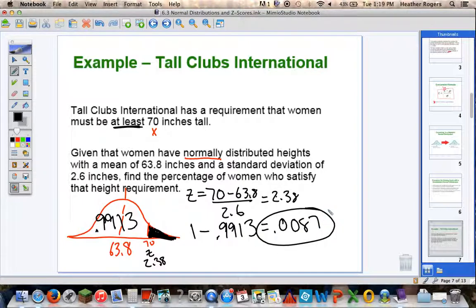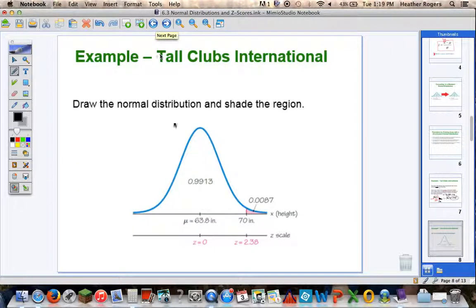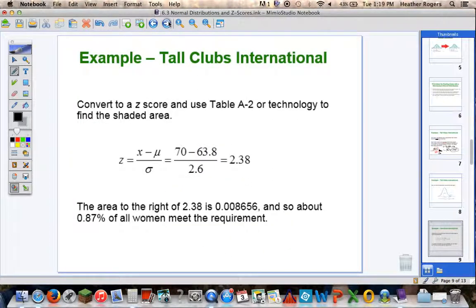So I'm going to subtract 1 minus 0.9913, and I get 0.0087. So what is the probability of a woman being 70 inches or taller? 0.0087, less than 1%, according to this data, of women are taller than 70 inches. Here's a little bit cleaner view of it. We have our 0.9913, 0.0087, our z-score scale down at the bottom.